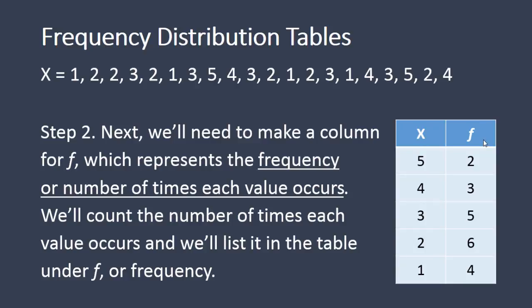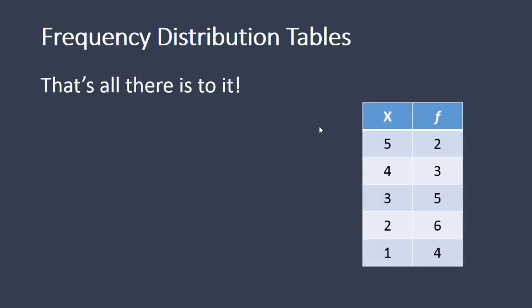So we'll make this table here, remember our X column before. Now we have this column f as I had indicated earlier, and we list the number of times each value occurs. Notice here we have a 4 under f for an X of 1. So this means we have 4 values of 1 for our variable, or in other words, we have a frequency of 4 for X equals 1. We have 6 values for a score of 2. Here we have 5 3s, 3 4s and 2 5s.